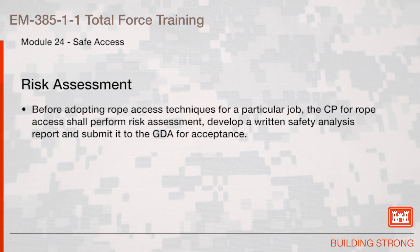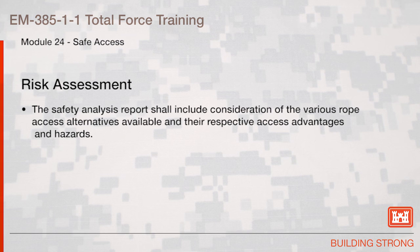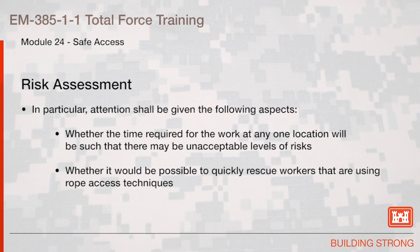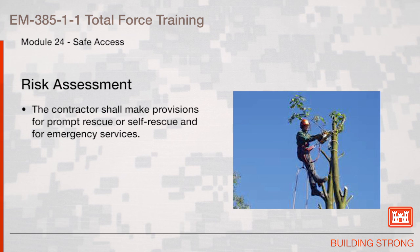Risk assessment: Before adopting rope access techniques for a particular job, the competent person for rope access shall perform a risk assessment and develop a written safety analysis report and submit it to the government-designated authority for acceptance. The safety analysis report shall include consideration of the various rope access alternatives available and their respective access advantages and hazards. Attention shall be given to the ability of the suspended person to safely use materials and tools, whether the work may loosen material creating a hazard, whether the time required for work may create unacceptable risk levels, and whether it would be possible to quickly rescue workers using rope access techniques. The contractor shall make provision for prompt rescue or self-rescue and for emergency services.